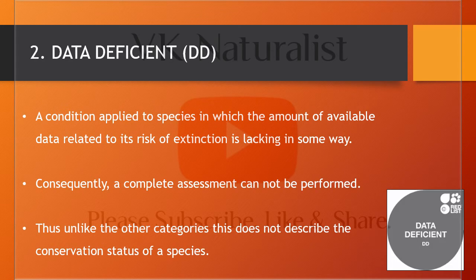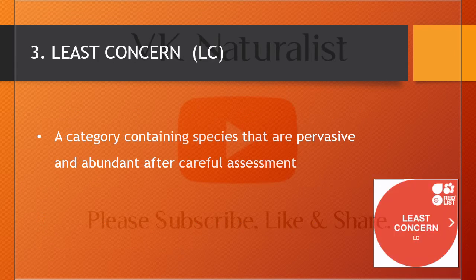The second category is Data Deficient, abbreviated as DD. In this category, those species are placed whose amount of data related to their risk of extinction is lacking, so a complete assessment cannot be achieved. This category does not describe the conservation status of a species like the others.